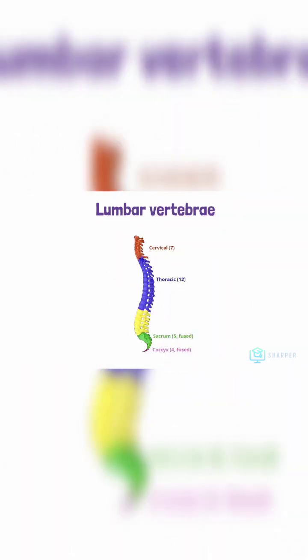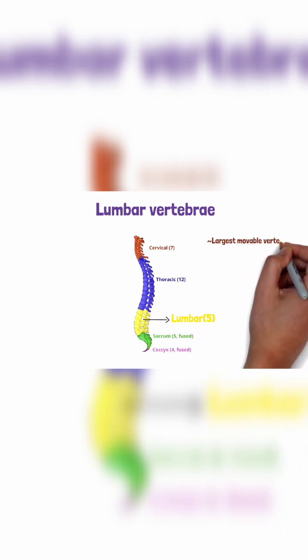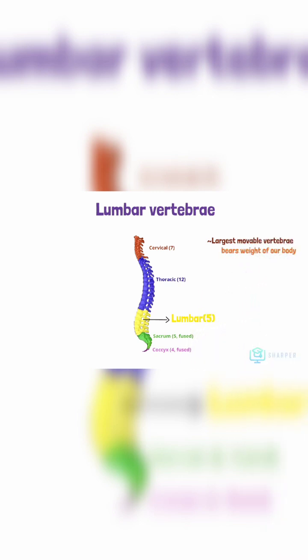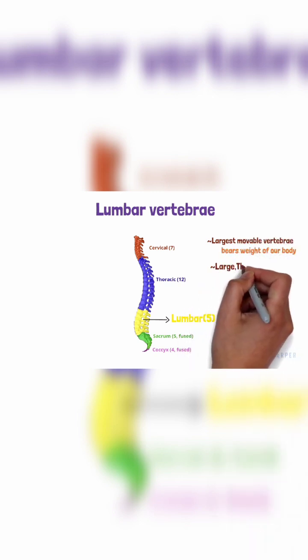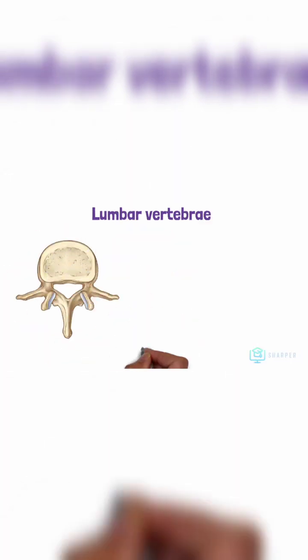Lumbar vertebrae, which are in the lower back, between the thoracic vertebrae and the sacrum. They are the largest movable vertebrae, which helps with bearing the weight of the upper body. They have a massive, thick, and strong body.